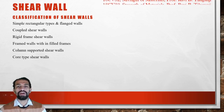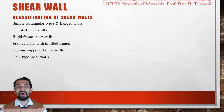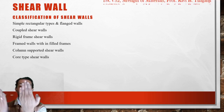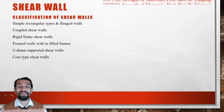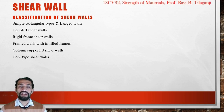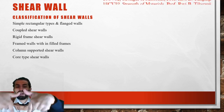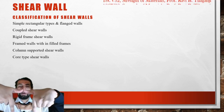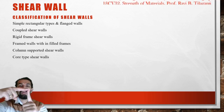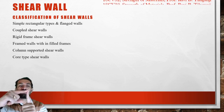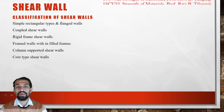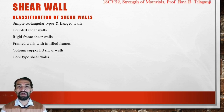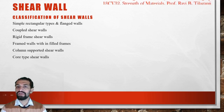Rigid frame shear walls are made up of steel or concrete in a particular rigid way. Frame walls with filled-in means a particular frame with columns and beams are jointed together and filled with the walls.